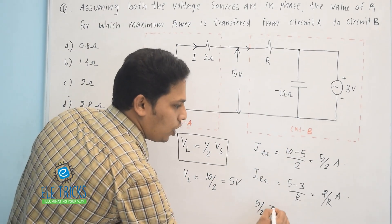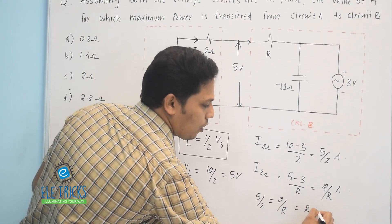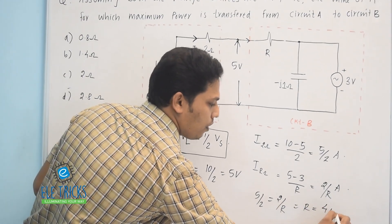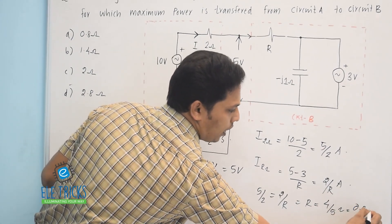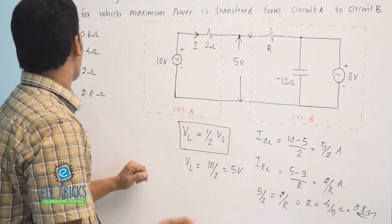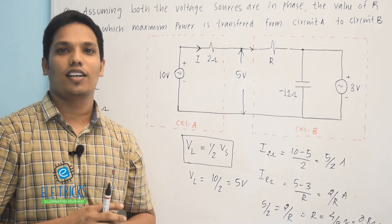That is 5 by 2 is equal to 2 divided by R. From this, R is equal to 4 divided by 5 ohm, that is equal to—we can solve this and we will get 0.8 ohm is the right answer. So actually the right answer is option A.